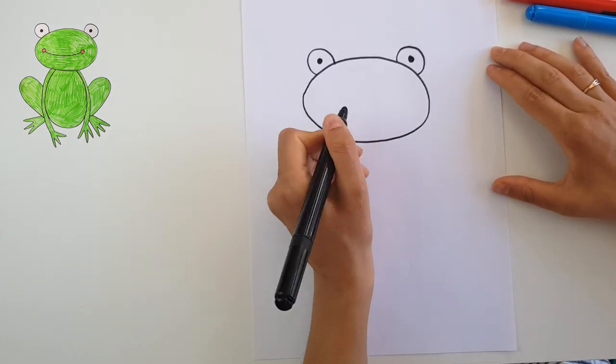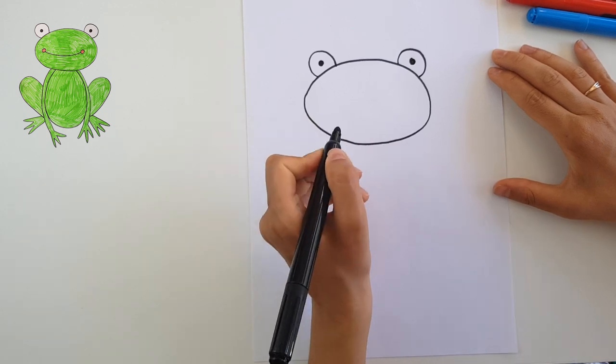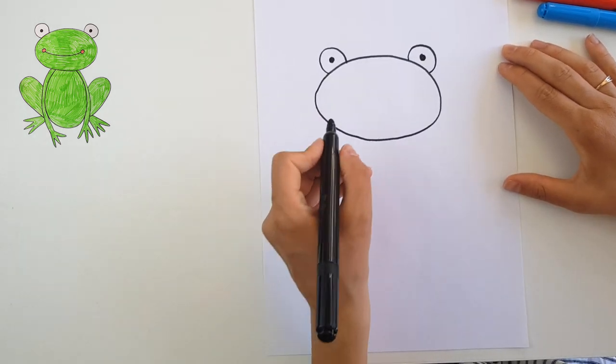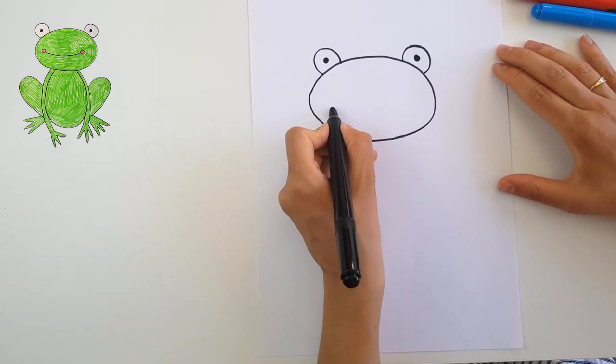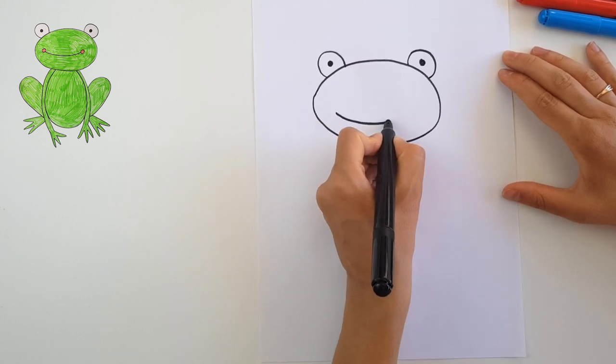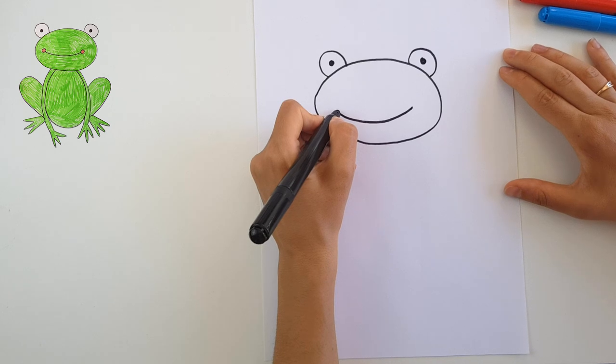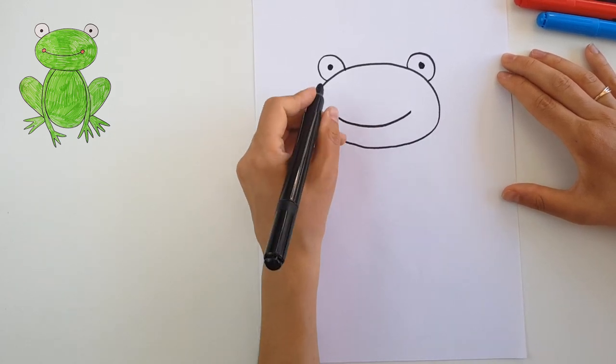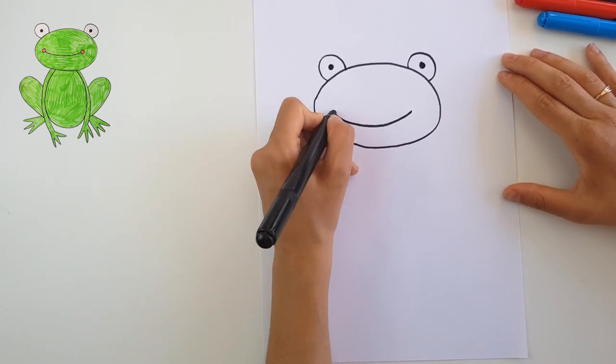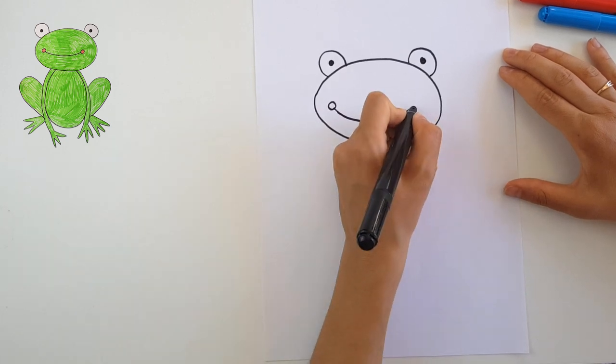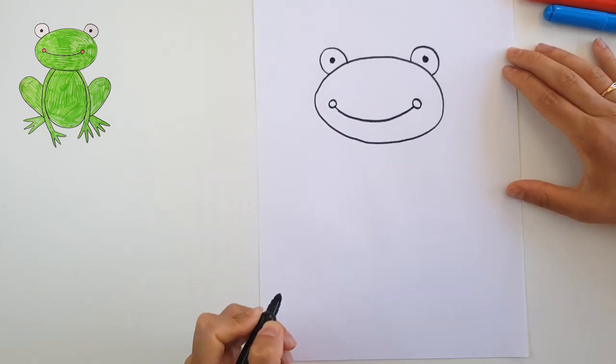Let's continue with the smile. The mouth of the frog is very big, so let's draw a big smile for our frog. I will put as well here some cheeks to look even more cute.